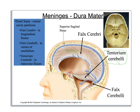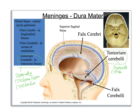The tentorium cerebelli is in the transverse fissure and it's going to separate the cerebrum from the cerebellum. Whereas the falx cerebri separates the right and left hemispheres. The falx cerebelli dips down here into the vermis of the cerebellum and basically separates the right and left lobes of the cerebellum.